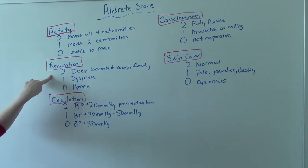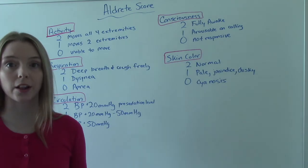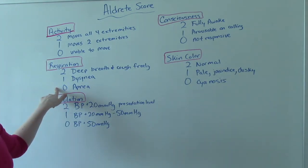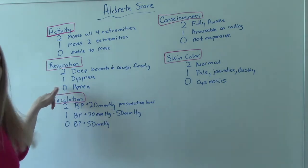Respiration. So you should be able to deep breathe and cough on your own. You get a 2 for that. You get a 1 if you're showing signs of distress or if you have limited breathing or shallow breathing. And then if you're apneic, obviously that's an emergency, that's really bad, but you would get a 0 on this score.